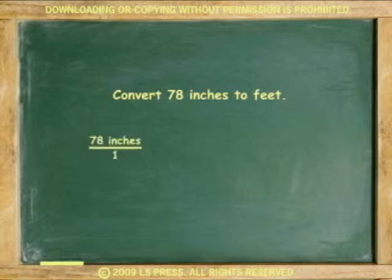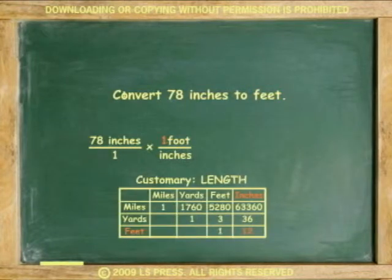Number one, write a ratio of the given unit over one. In this case, it is 78 inches over one. Two, multiply ratio by another ratio with the given unit in the denominator, that's the bottom part, and the unit to convert to in the numerator, that's the top part. Three, using the conversion tables, decide which unit is larger and place a one with the larger unit and the conversion factor with the smaller unit.